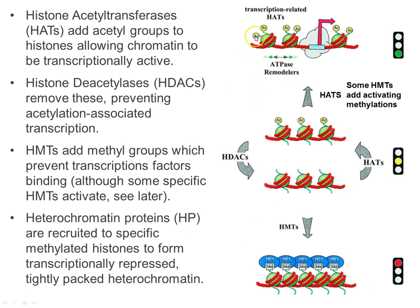Acetylated chromatin allows transcription to start — gene expression is on. Histone acetyltransferases add the acetyl groups, and if this is to be reversed, histone deacetylases remove them, putting chromatin into a less transcribable format. To silence chromatin, histone methyltransferases add a methyl group, and those methylated histones associate with heterochromatin proteins that condense the chromatin and switch off gene expression. Methyl groups can be removed to return chromatin to a semi-active state.